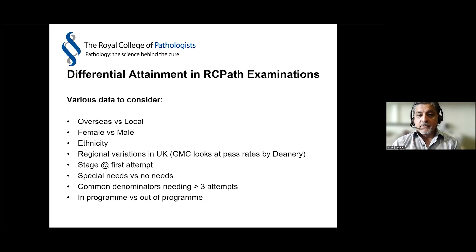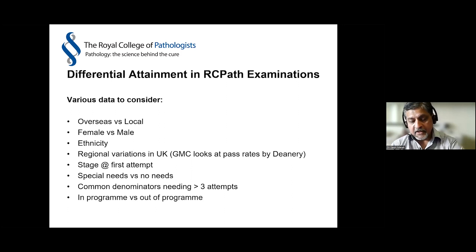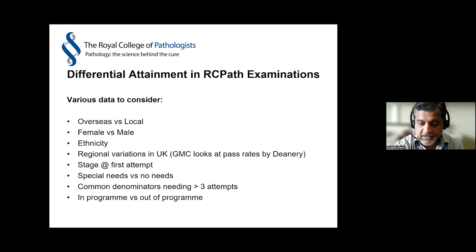Other parameters include special needs versus no special needs where reasonable adjustments have been made, looking for common denominators in candidates who have failed more than three times - which might help them in their fourth attempt - and whether candidates are in program or out of program, though that information is not readily available in our college data.